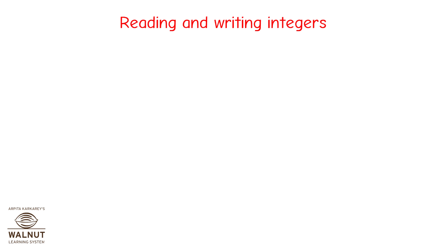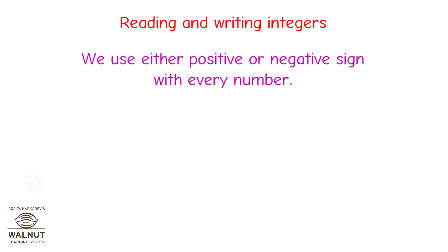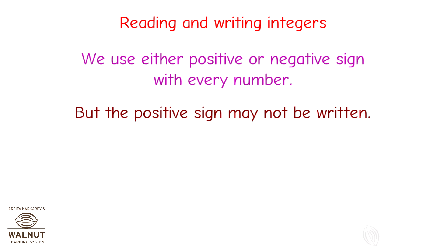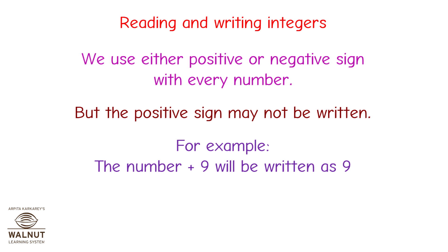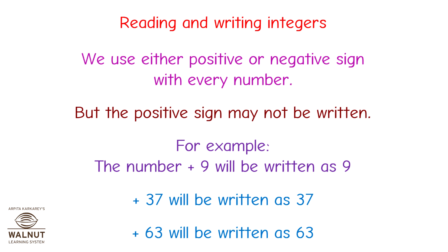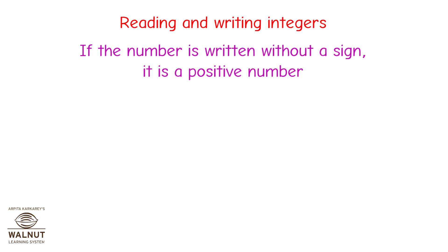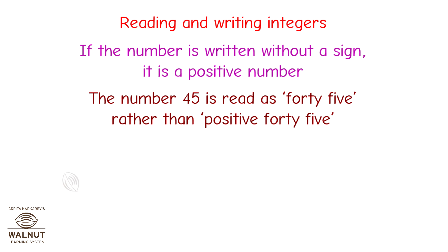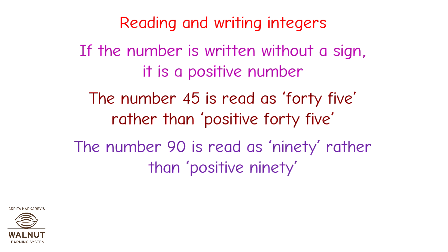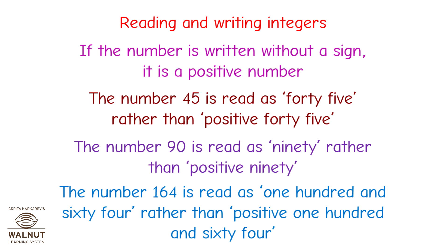Reading and writing integers. We use either positive or negative sign with every number. But the positive sign may not be written. For example, the number plus 9 will be written as 9. Plus 37 will be written as 37. Plus 63 will be written as 63. If the number is written without a sign, it is a positive number. The number 45 is read as 45 rather than positive 45. The number 90 is read as 90 rather than positive 90. The number 164 is read as 164 rather than positive 164.